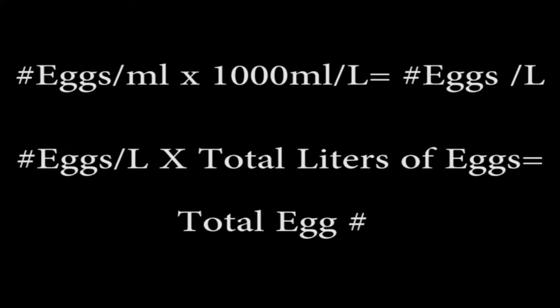First, multiply the number of eggs per milliliter by 1,000 to get number of eggs per liter. Next, take the number of eggs per liter and multiply by the total liters of eggs. This will equal the total number of eggs.